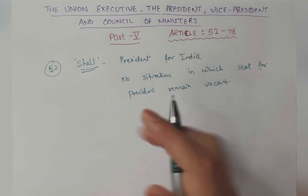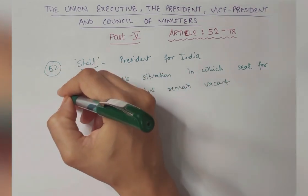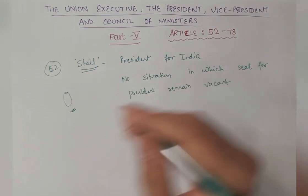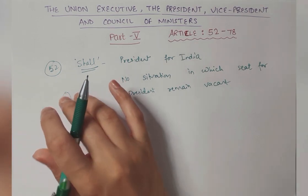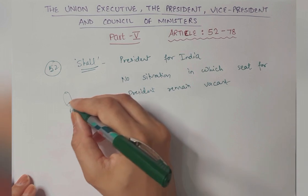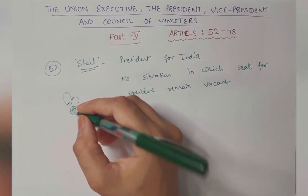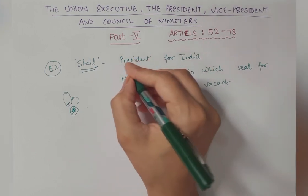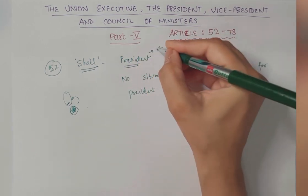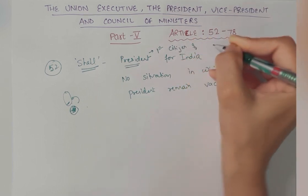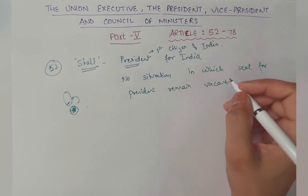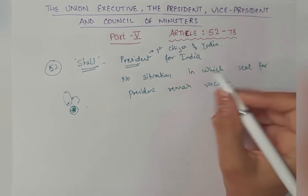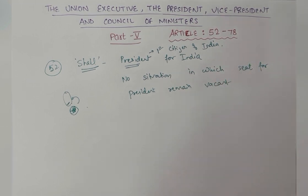Jab President ka term khatam honay wala hota hai, us situation ko dhyaan rakhte huye, kyunki agar President jo hamara working President ho, jab uska time period khatam hoga to wo retire ho jaega. Next ko aane mein thoda time lagega, us time ko bhi cover up karne ke liye, pahle hi next election ho jaana chahiye. President is the first citizen of India — remember that. Just like the First Lady is a title, same way, the President is the first citizen of India.